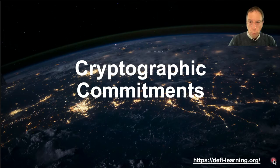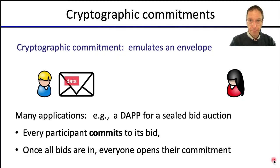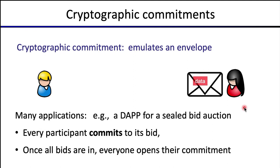In this segment, we're going to work towards zero-knowledge proofs by introducing an important cryptographic primitive: a cryptographic commitment. A cryptographic commitment emulates what in the physical world we call an envelope. Bob can put some data inside an envelope — hiding what the data is — and send it to Alice. Alice doesn't know what the data is, but later Bob can open the envelope and convince Alice what was inside. This allows Bob to commit to data and later reveal it.